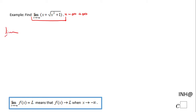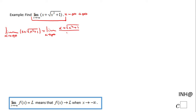For that reason, I'm going to rewrite this expression in fraction form with a denominator of 1. Now I'm going to rationalize by multiplying by the conjugate, so this will be x plus square root of x squared plus 1 over x minus square root of x squared plus 1, over the same expression.